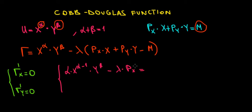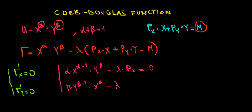Now let's do the same for the Lagrange derivative with respect to y, where y is the variable and everything else is constant. The derivative of y^β is β·y^(β−1), multiplied by the constant x^α. For the lambda term, px·x has nothing to do with y so we ignore it, and the derivative of py·y with respect to y gives us py. So this derivative must also equal 0.